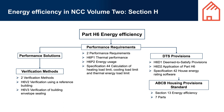Specification 42 — House Energy Rating Software sets out the requirements for satisfying H6 P1 and H6 P2 using the NatHERS DTS Energy Rating Software Pathway. Specification 44 — Calculation of Heating Load Limit, Cooling Load Limit and Thermal Energy Load Limit — contains the method of calculating the heating load limit, cooling load limit, and thermal energy load limit for compliance with H6 P1 and J1 P2 in Volume 1.